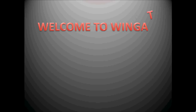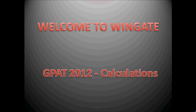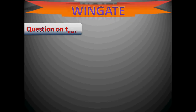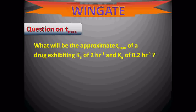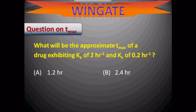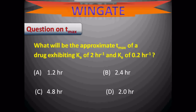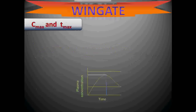Welcome to Wingate's series of video tutorials. In this video, I am going to show the GPAP 2012 Pharmaceutical Calculations. Let us start with the first question on Tmax: What will be the approximate Tmax of a drug exhibiting Ka of 2 hr⁻¹ and Ke of 0.2 hr⁻¹? The options are A: 1.2 hr, B: 2.4 hr, C: 4.8 hr, and D: 2.0 hr.